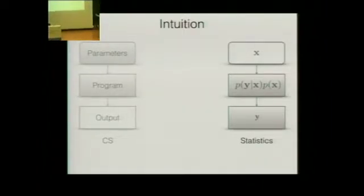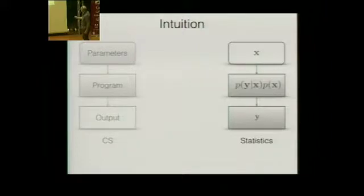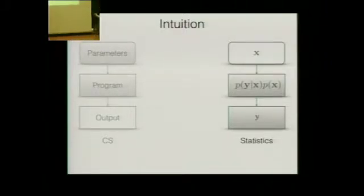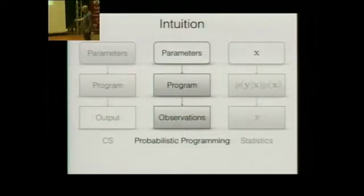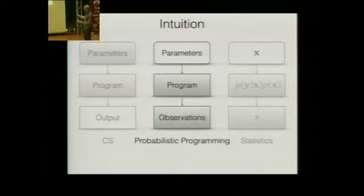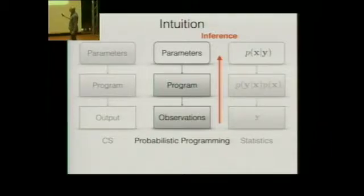The way we do this is we write down some abstract model, typically a generative model, that when given some setting of the latent variables executes forward and generates the data. The problem is that what we're given is the output. We write down a model in some mathematical denotation and have to get backwards to say something about the latent variables X of interest.